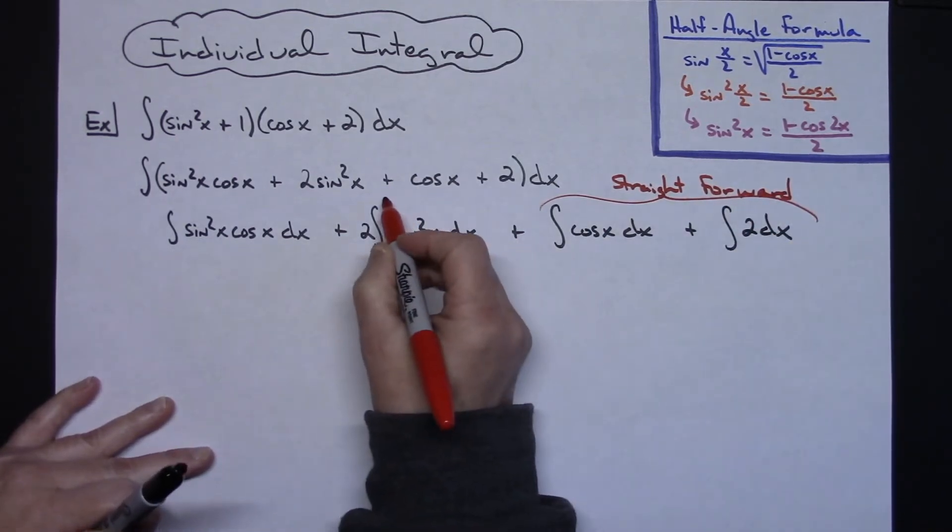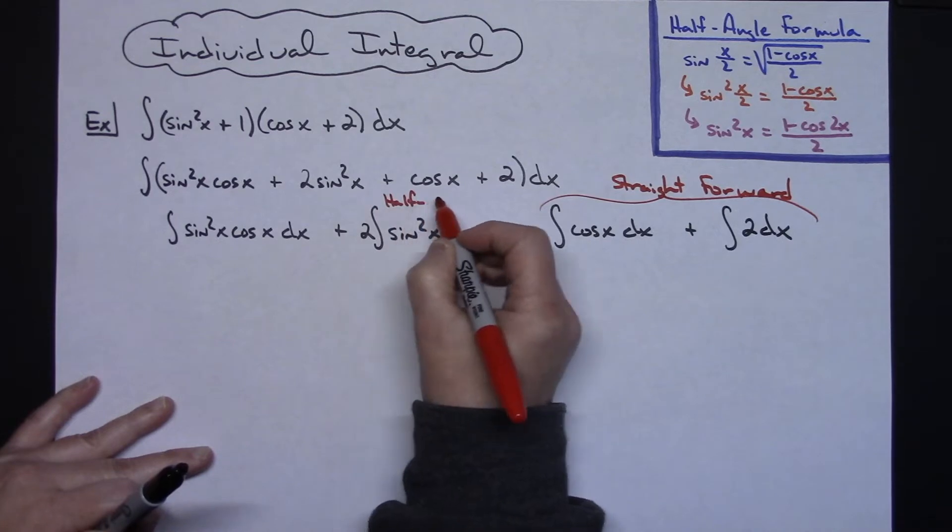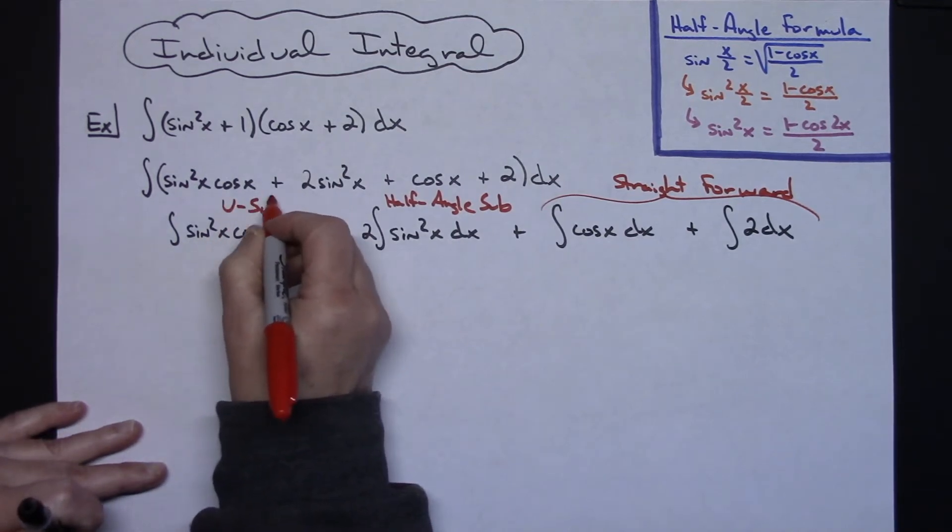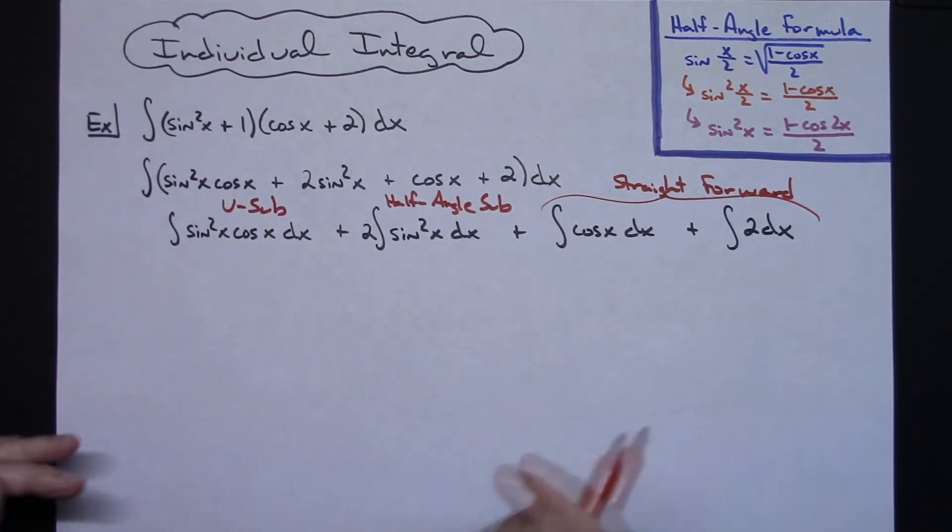This one is going to be our half angle substitution. So half angle sub there for that one. And then this one is going to be a basic u sub. So we'll treat each of these individually.